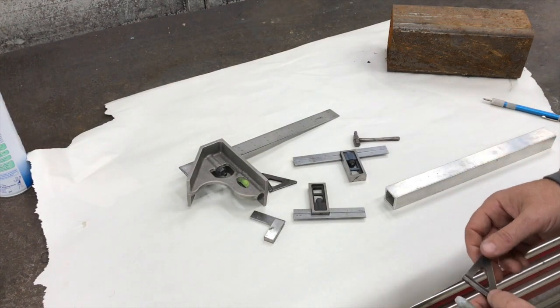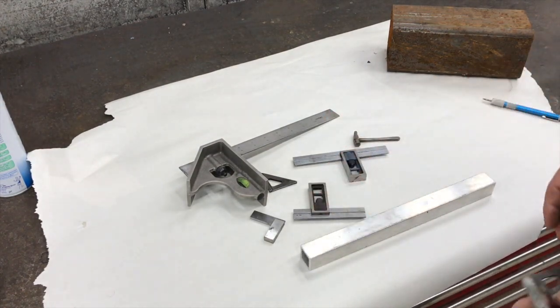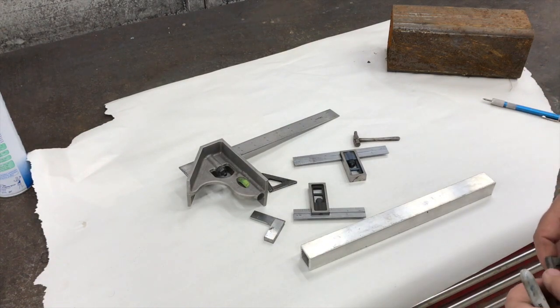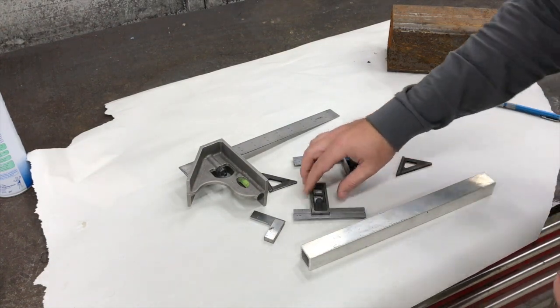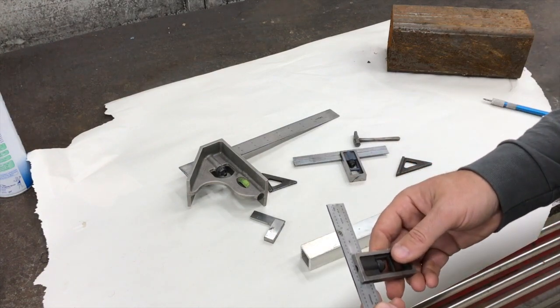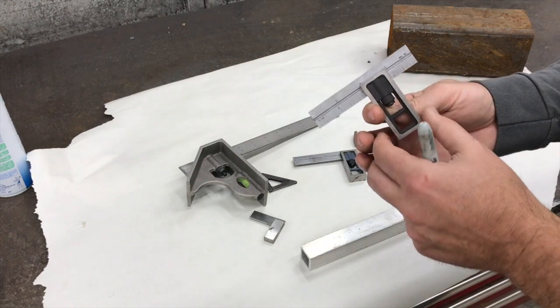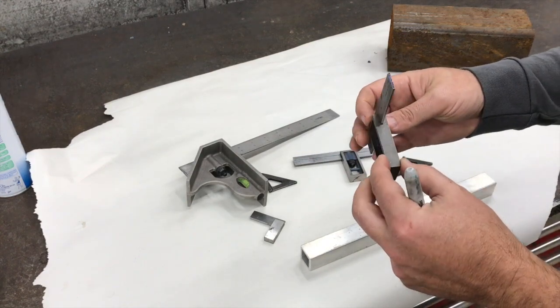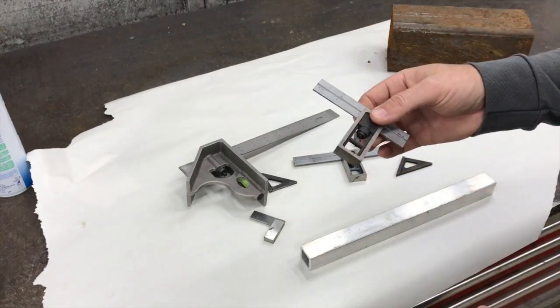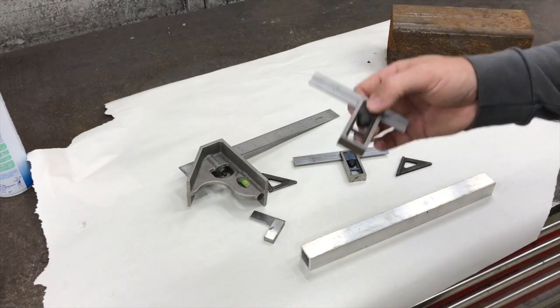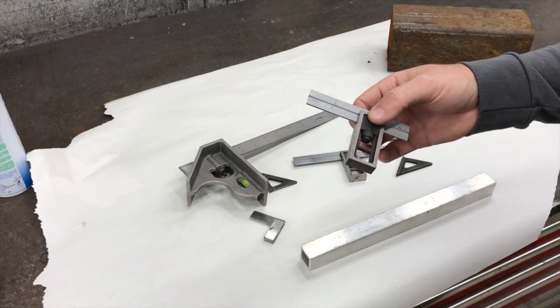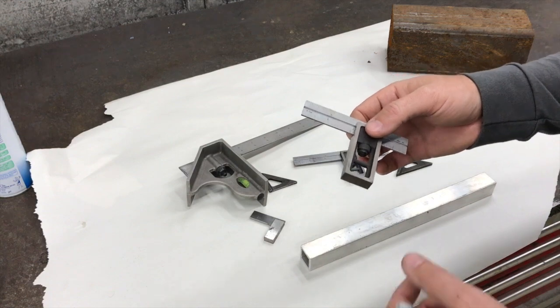When you're doing any kind of layout work and you're trying to be very precise with it, that's where these come into play. I wanted to show this type of square here as well. Honestly, these are not marked and I do not remember the brand name of these, but these are also a high-quality square, not something that you can go to Home Depot and buy.